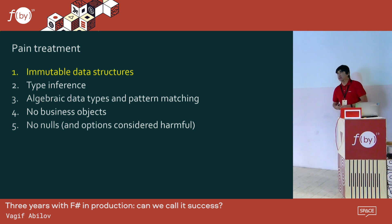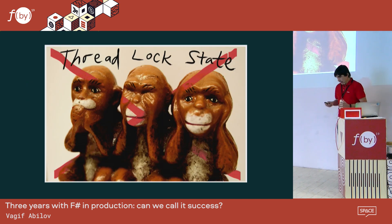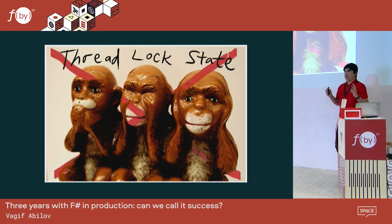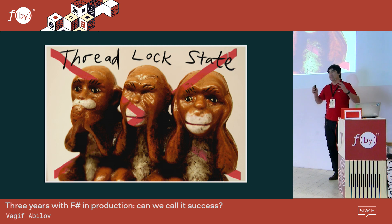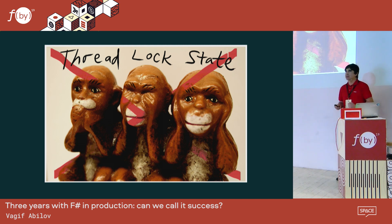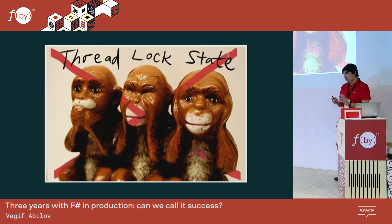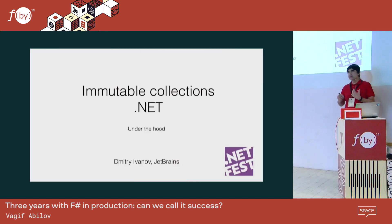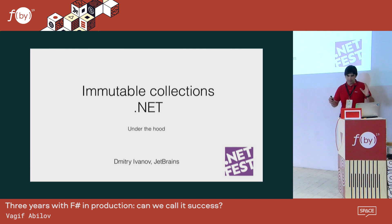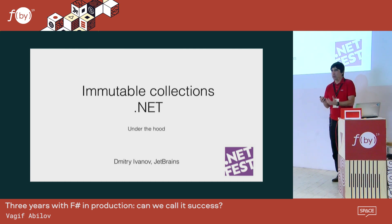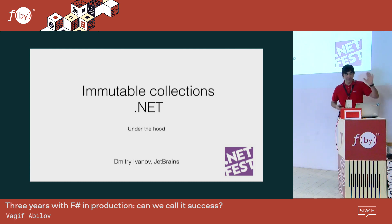Immutable data structures were one of the reasons for us to search for something different. We had a first-generation product where we were struggling with thread synchronization, with locking shared state — typical for an enterprise product with a lot of concurrency. To illustrate how difficult this can become with C# and Java, I'm using an example I took from another talk. I wanted to come up with my own example, but somebody could say I made up examples that fit my purpose, so let's take an example from a C# talk — Dmitry Ivanov from JetBrains, from his talk at NetFest.